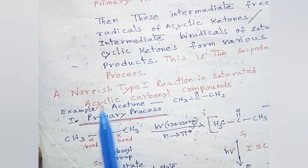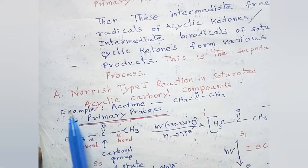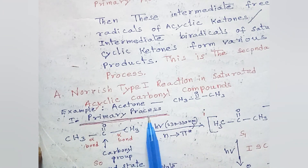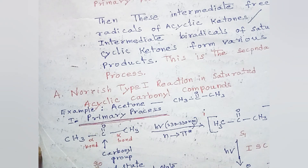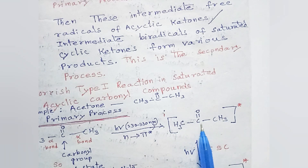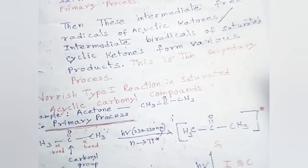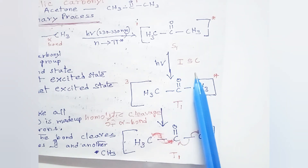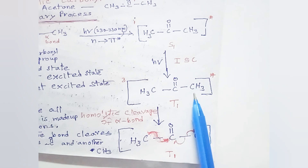Example: acetone, CH₃–C(=O)–CH₃. In the primary process, acetone from the ground state is excited via n to π* transition upon irradiation by UV light, and goes to the singlet excited state S1. From S1, through inter-system crossing, it goes to the triplet state T1.